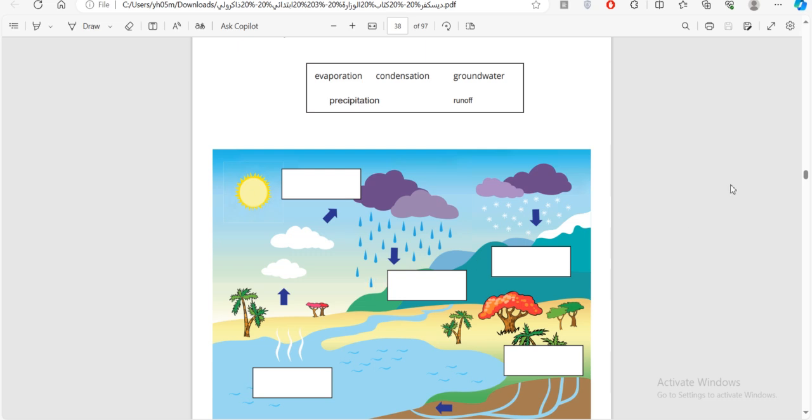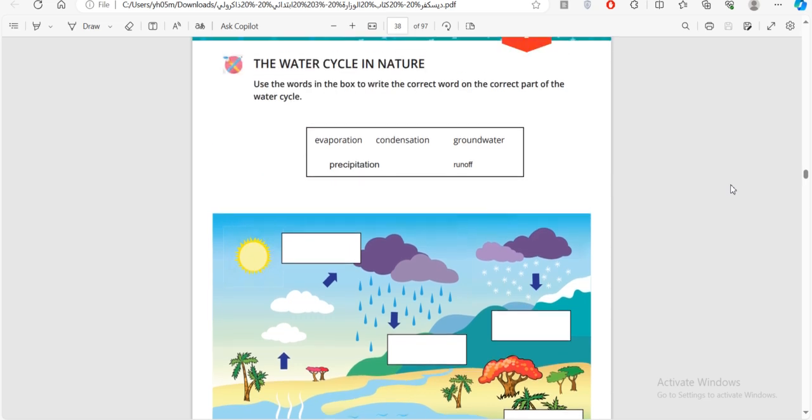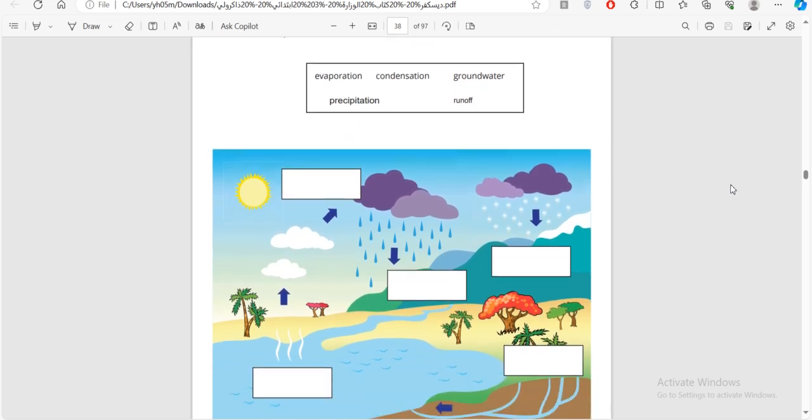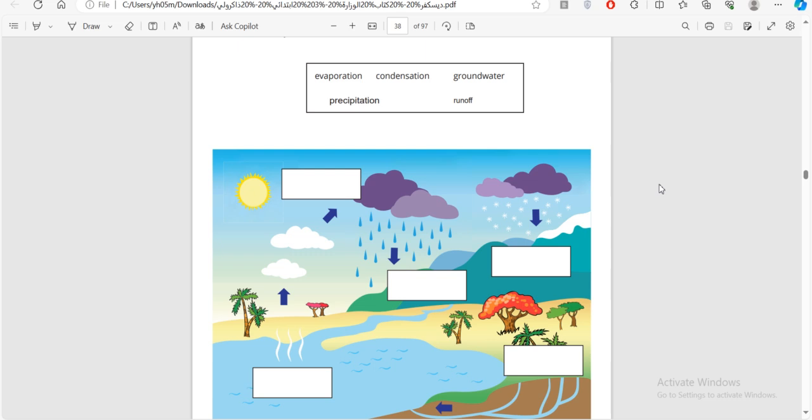Now, what we need to do is we want to fill in the gaps using these words. So this is a body of water. What's happening here? You can see the water is going up to the sky. So is it evaporation, condensation, groundwater, precipitation, or runoff? Which one is it? I'll give you a chance.